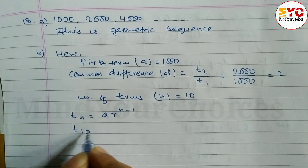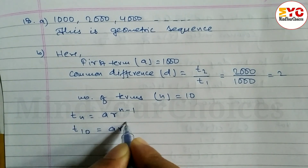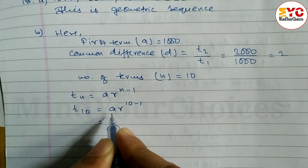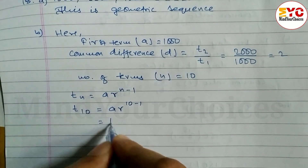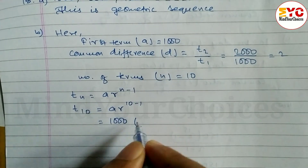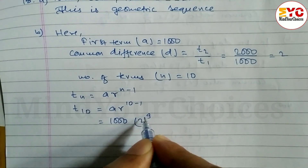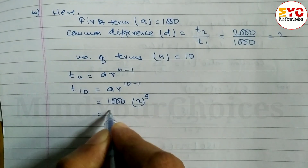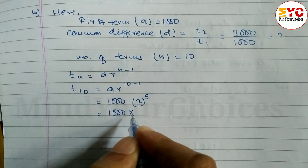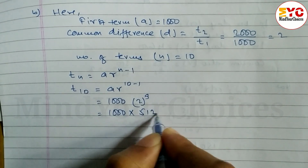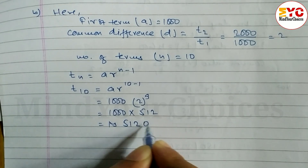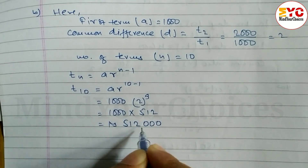So T10 equals a times r to the power 10 minus 1. Putting in the values: a is 1,000, r is 2, so we have 1,000 times 2 to the power 9. When you subtract, we get 9. So 1,000 into 2 to the power 9 — 2 to the power 9 is 512 — equals rupees 512,000.